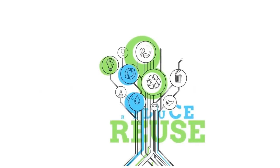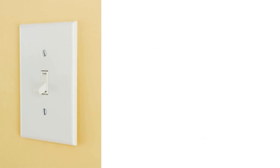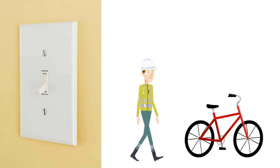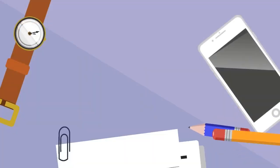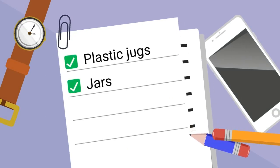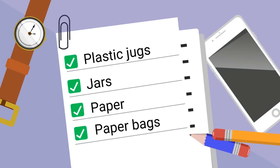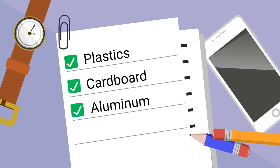Because many important resources are limited, we can all reduce, reuse, and recycle. You can turn off lights when you are not in a room. You can ride your bike more and walk more to reduce the amount of gasoline used. You can reuse and recycle things like plastic jugs, jars, paper, paper bags, plastics, cardboard, aluminum, and even steel.